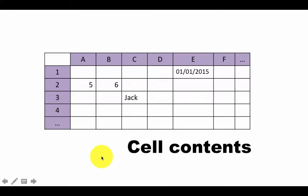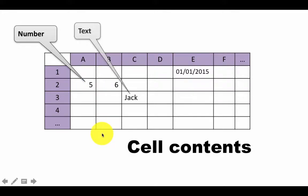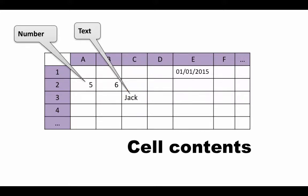So what kind of things can a cell contain? If you look at cell A2, it contains a number, and so does cell B2. Cell C3 contains the text 'Jack', so it's just text — some words written down. You can also see that cell E1 happens to contain a date. From this you can already see that a cell can contain contents of different types. These are all examples of cell contents.